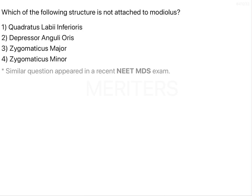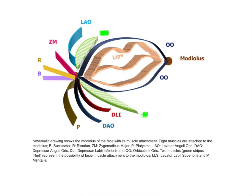To know what is not attached to the modiolus, first we need to understand what is attached to it. Looking at the schematic diagram, the modiolus is also known as modiolus anguli oris. It is a chiasma of facial muscles, also known as commissural modiolus — a small fibromuscular structure.